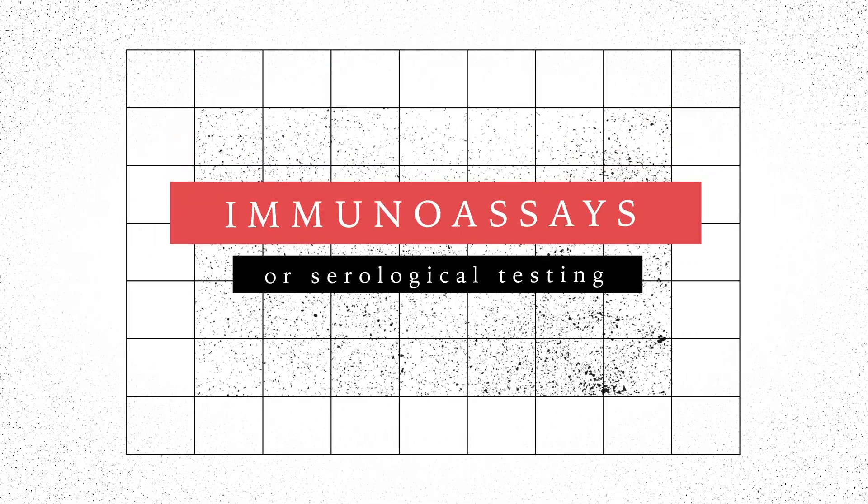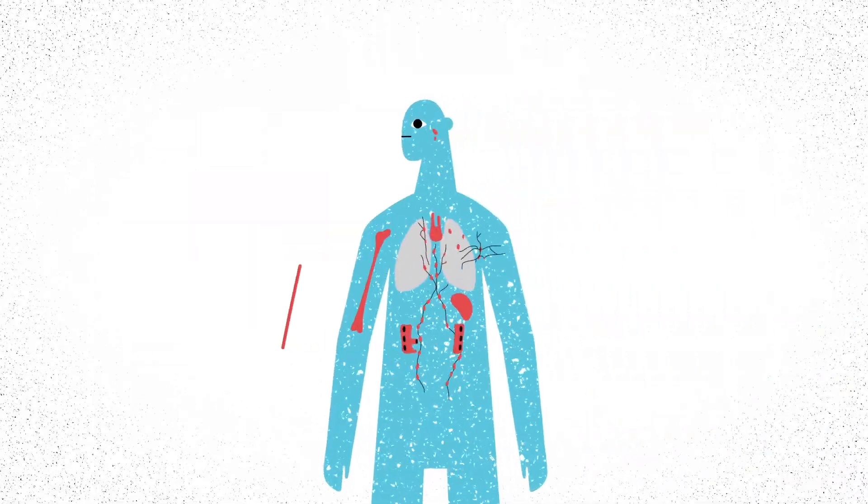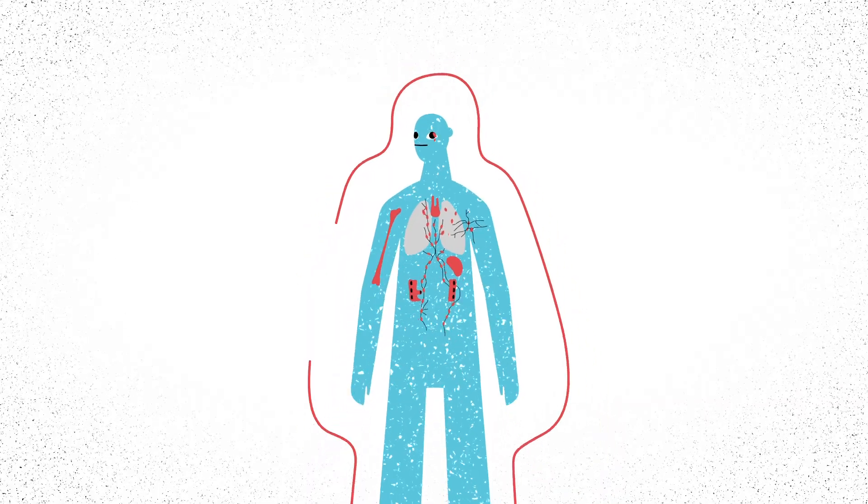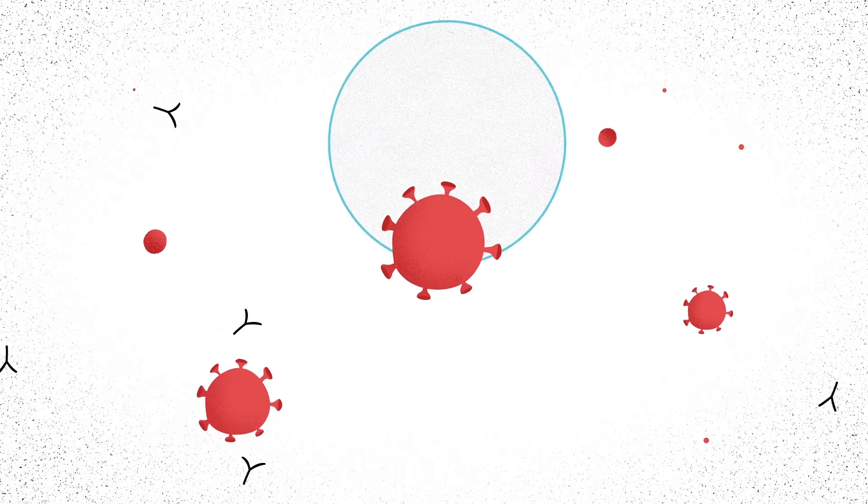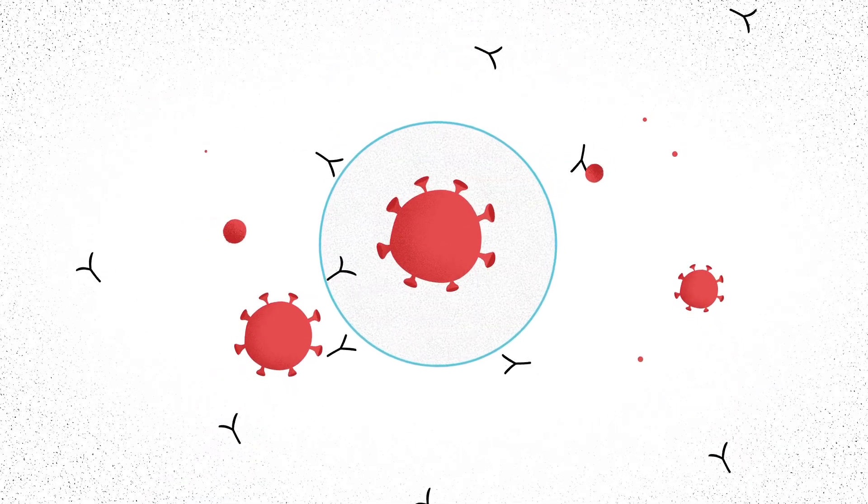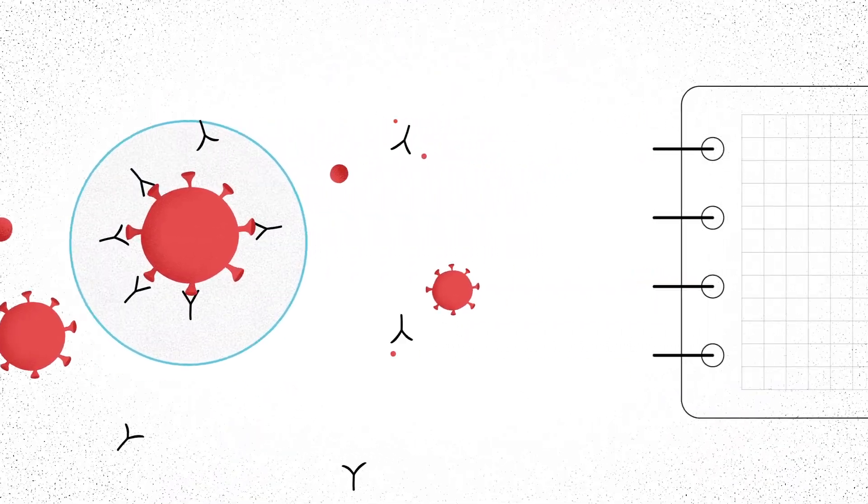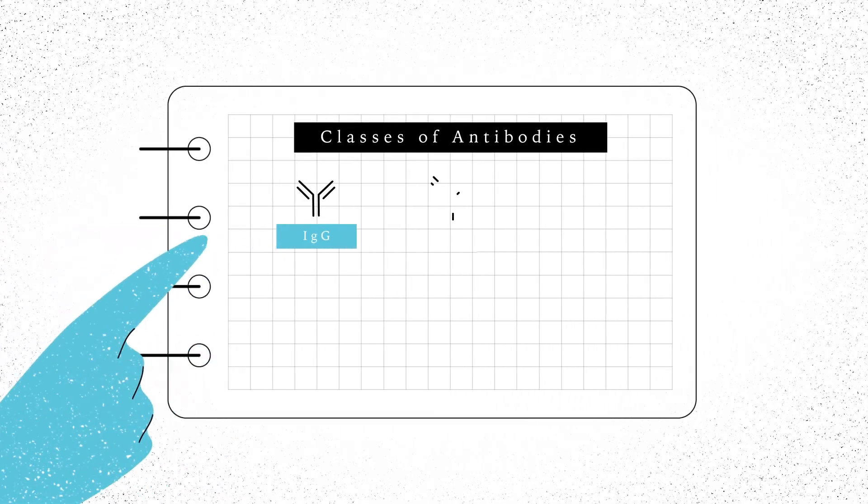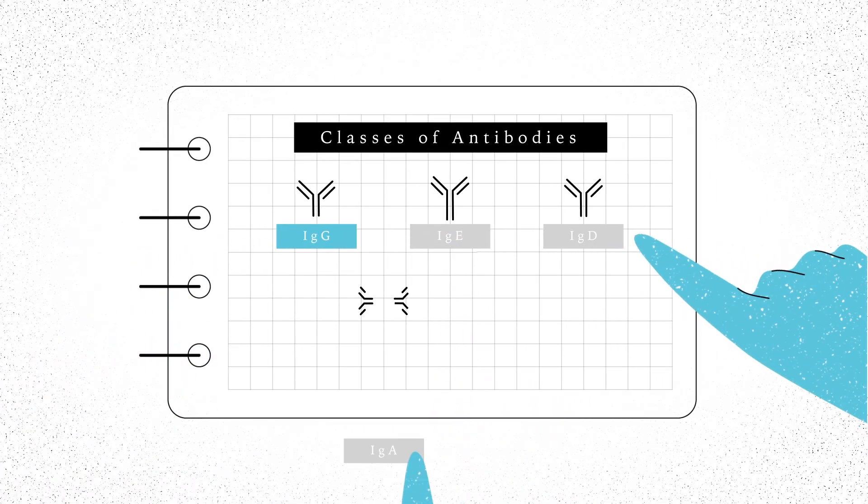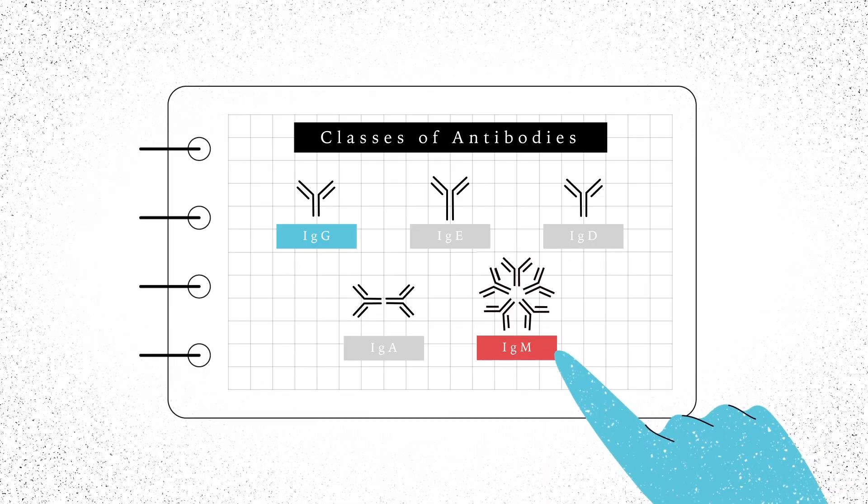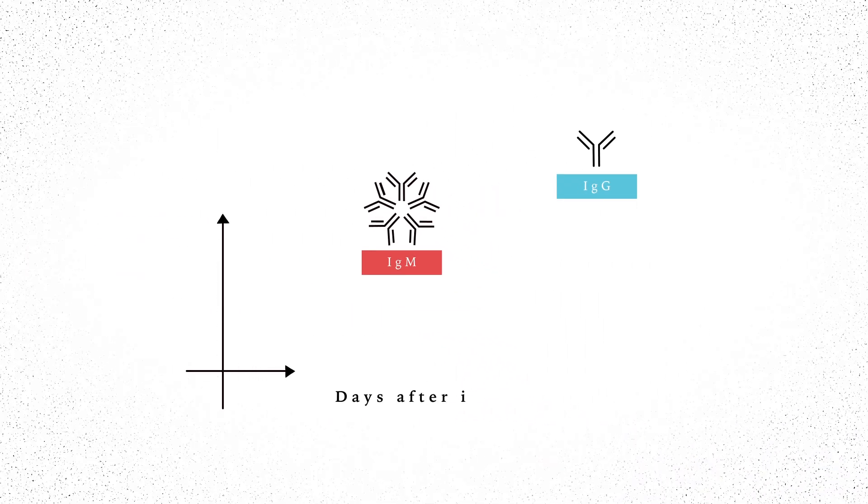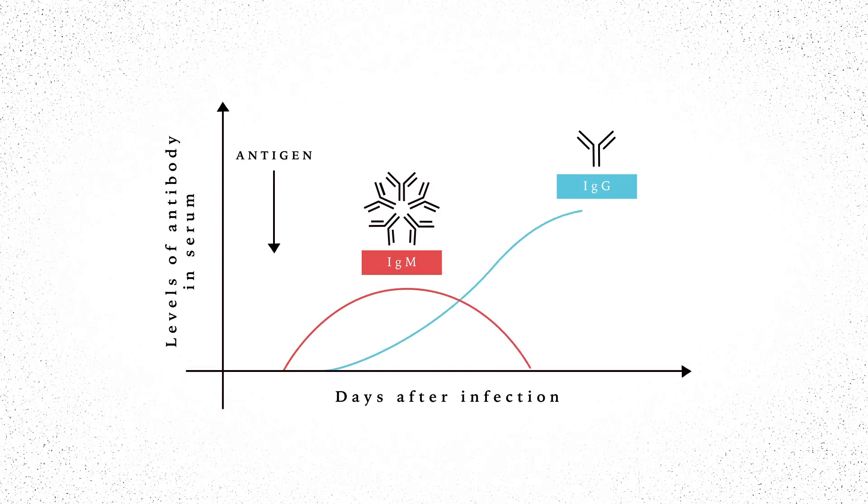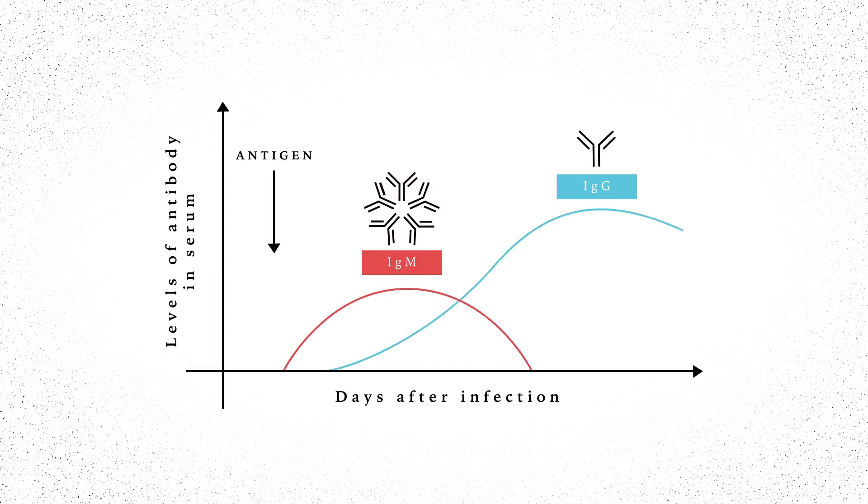Immunoassays, on the other hand, tap into the immune system's memory of the virus, showing if someone has previously been infected. They work by targeting virus-specific antibodies generated by the immune system during infection. These are specialized classes of proteins that identify and fight foreign substances, like viruses. Immunoassays may detect IgG antibodies, the most abundant class, and IgM antibodies, the type that's first produced in response to a new infection.